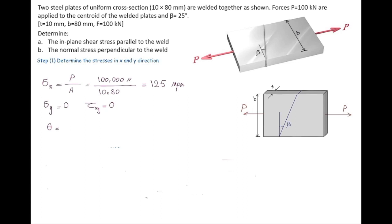Beta is going to be clockwise and we know that clockwise is going to be negative. So angle of theta that should be considered as negative of beta which is negative 25 degrees.